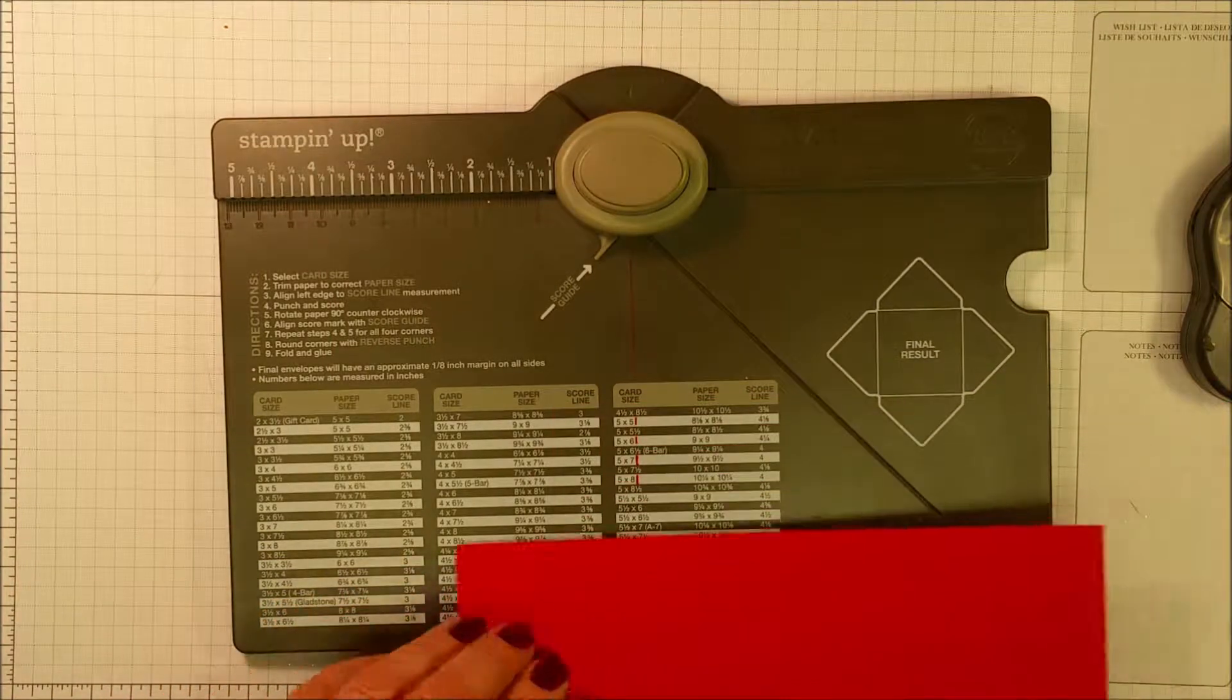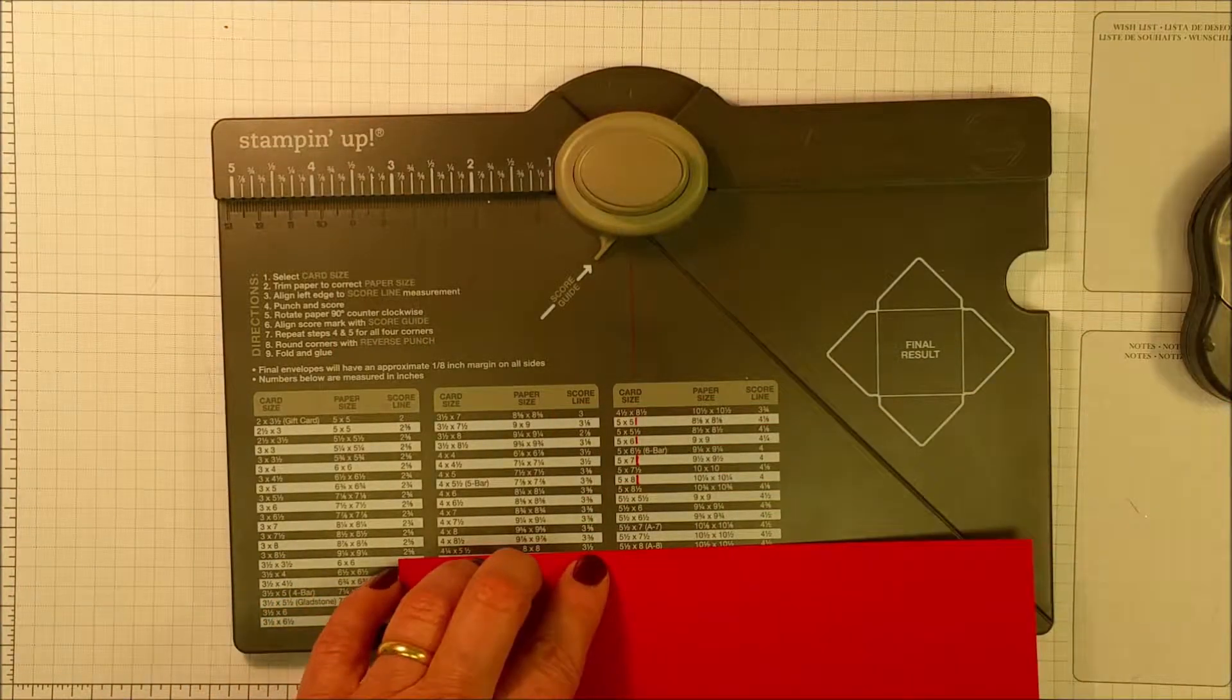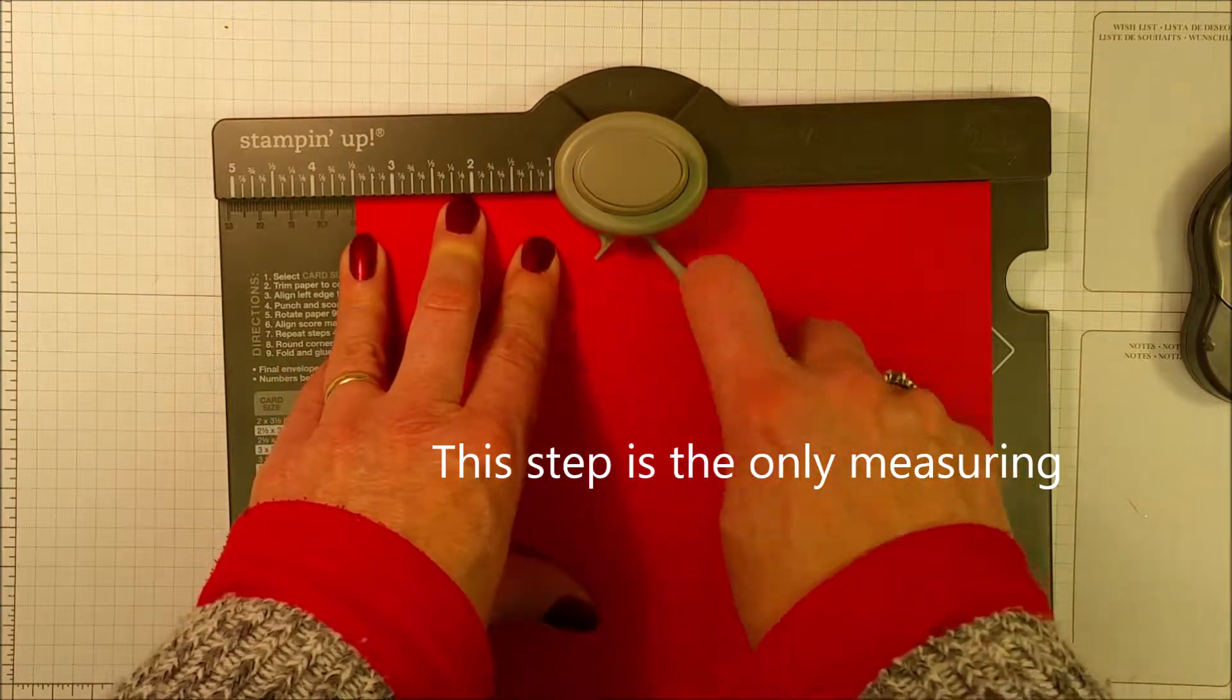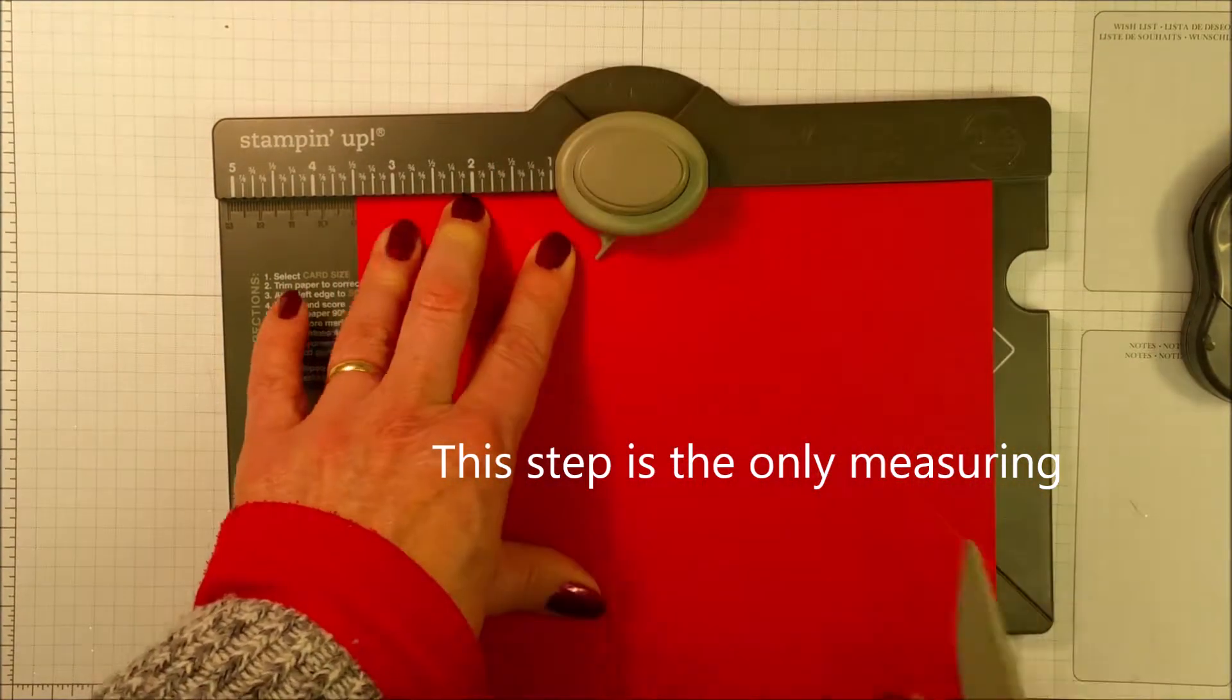Here's my paper. The direction said to put it at 3 1/2. I lay my scoring tool on there. Score it. Punch it.